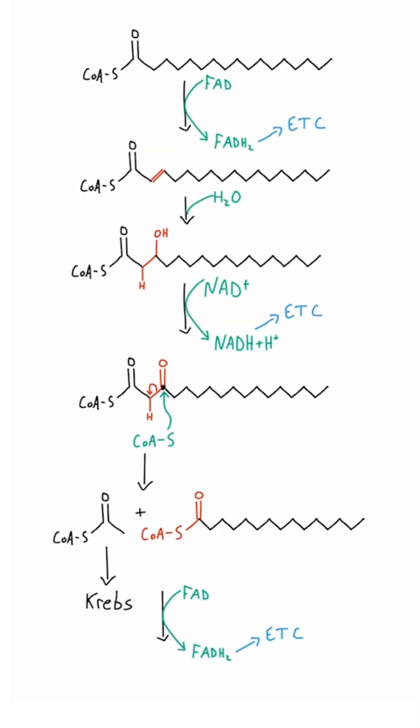Once inside the matrix, we undergo the actual oxidation process. Everything from here on out takes place in the matrix. We oxidize this chain of carbons and eventually produce a molecule of coenzyme A. In the first step, FAD gets reduced to FADH2, which then goes to the electron transport chain.